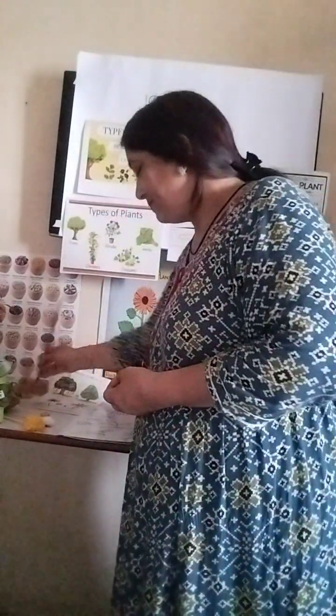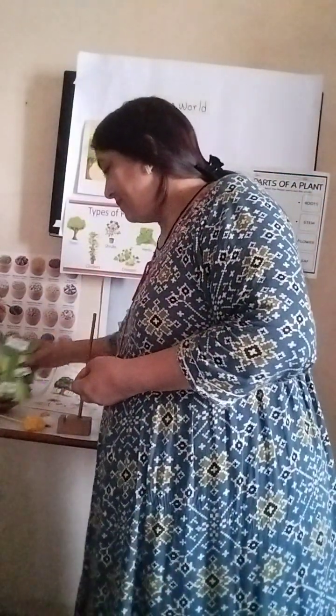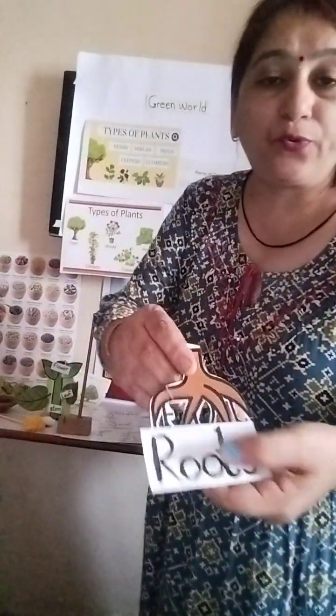Let's see the examples of the types of plants. First, we will learn the different parts of the plants. Let's begin with the different parts of the plants. These are the roots - plants grow from the roots.